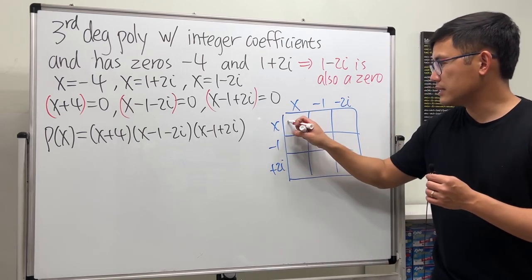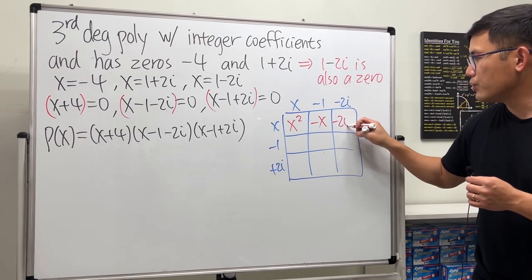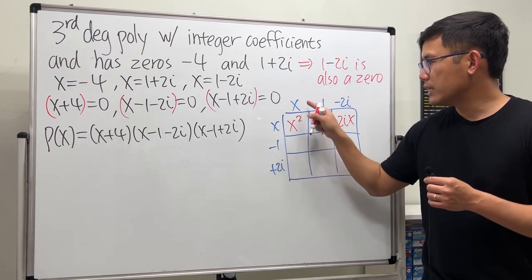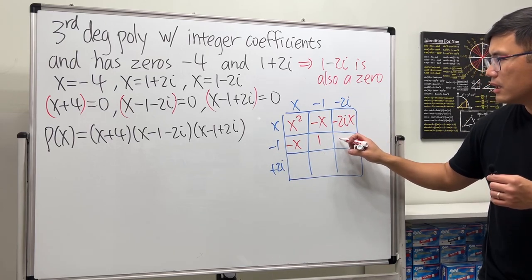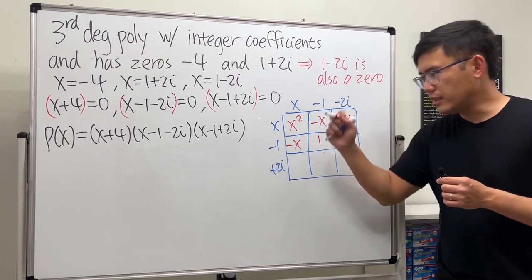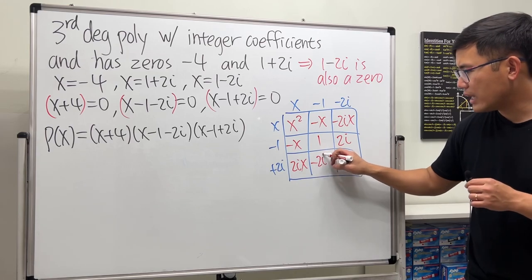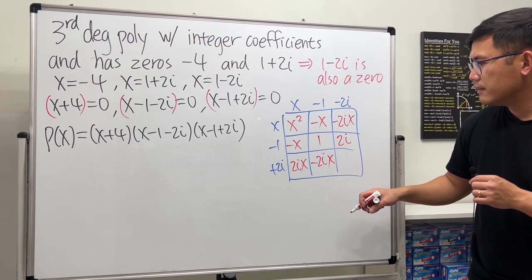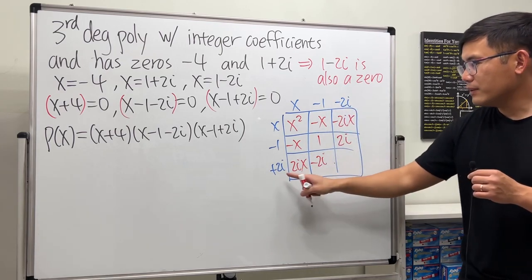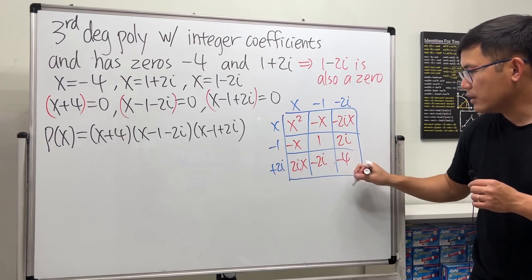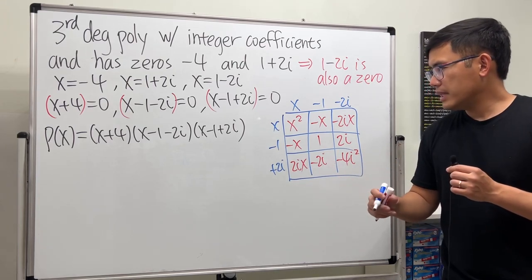In this box we do x times x, that's x². Continue: x times -1 is -x, x times -2i is -2ix. Then -1 times x is -x, -1 times -1 is 1, -1 times 2i is 2i. Continue: 2i times x is 2ix, 2i times -1 is -2i, and finally 2i times -2i is -4i².